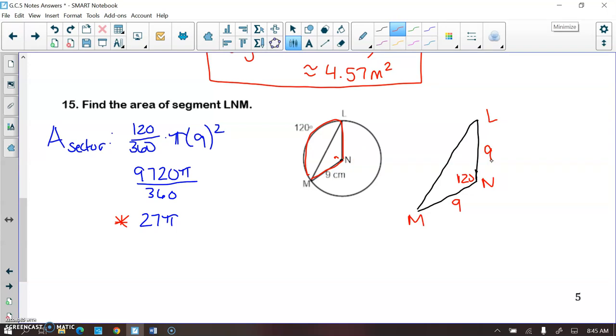And then MN is a radius and so is LN, so they're both 9. Now remember, in the area formula for a triangle you need your base and your height, which in this case, since it's not a right triangle, I don't have my base and my height.